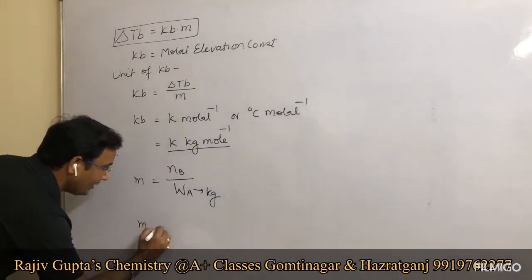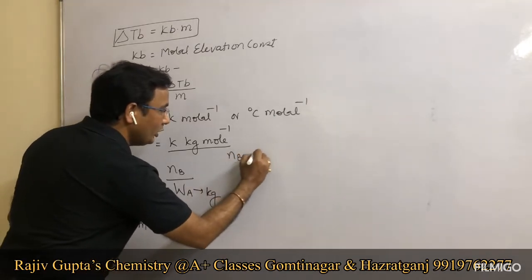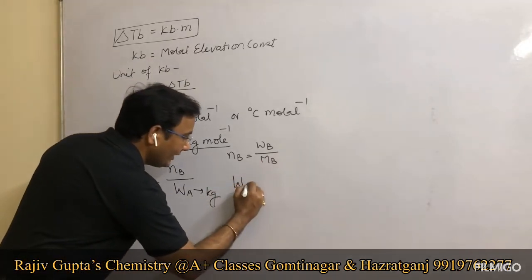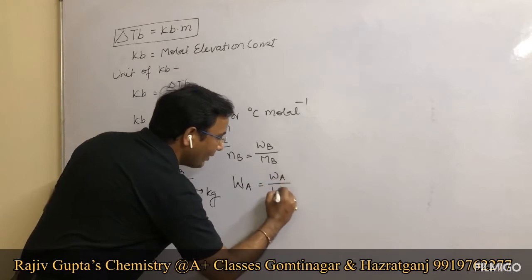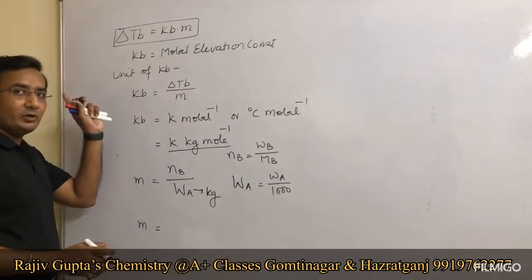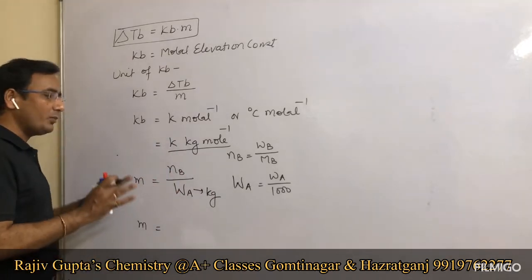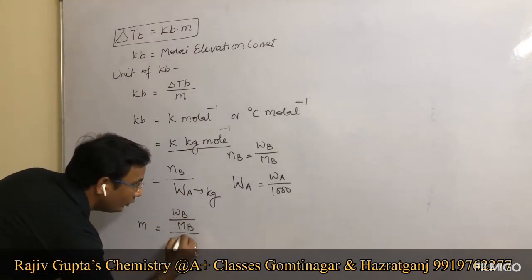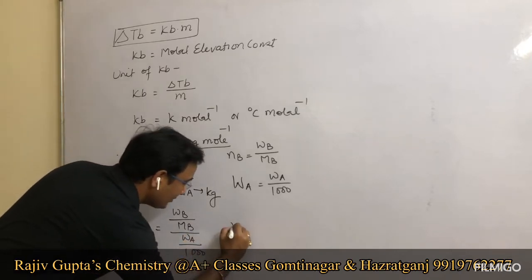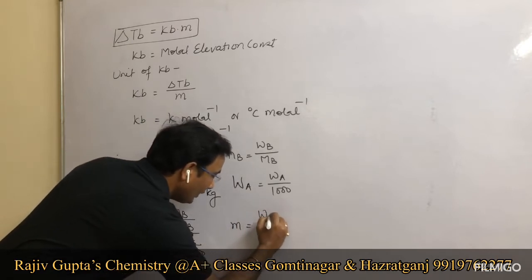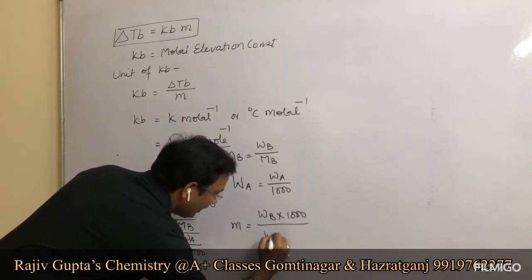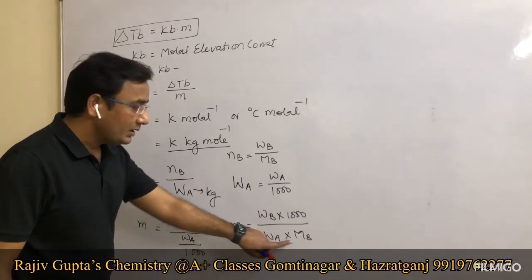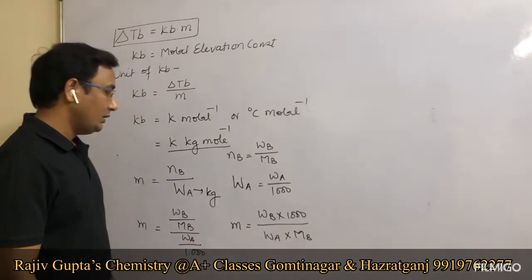Molality m is equal to nb (moles of solute) divided by mass of solvent in kg. Moles of solute nb equals weight of solute upon molecular weight of solute (Wb/Mb), and mass of solvent in kg equals mass of solvent in grams divided by 1000.